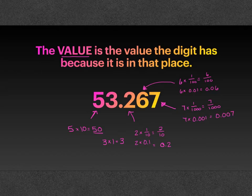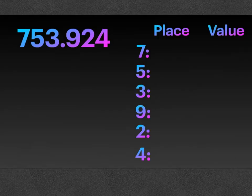So the value is the value the digit has because it is in that place, but the place is just the holder — it is the place that the digit can be found. For this number, 753 and 924 thousandths, we're going to be identifying the place and the value for each digit.